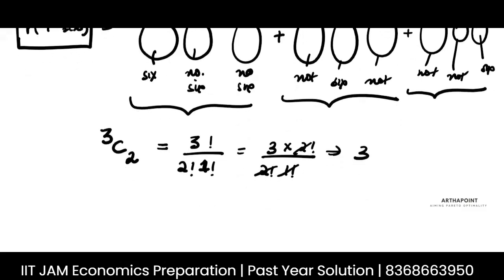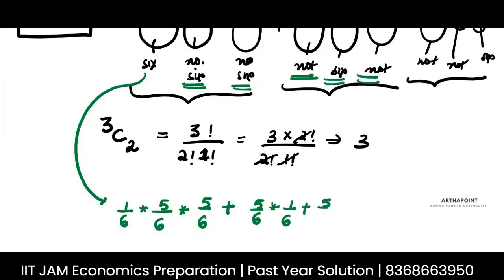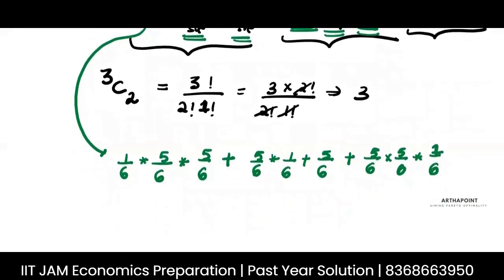Now the probability, because these are thrown independently, the probability that this would be a six would be 1 by 6. The other is not six, which means you're getting any of the other five numbers, 5 by 6. This is also not a six, 5 by 6. Plus this is not six 5 by 6, this is a six 1 by 6, this is not six 5 by 6. Plus not six 5 by 6, not six 5 by 6, but six, you're getting exactly six, 1 by 6. If you notice, aren't these three things exactly the same? Two times 5 and one times 6.